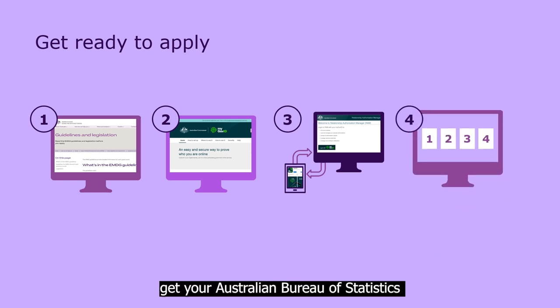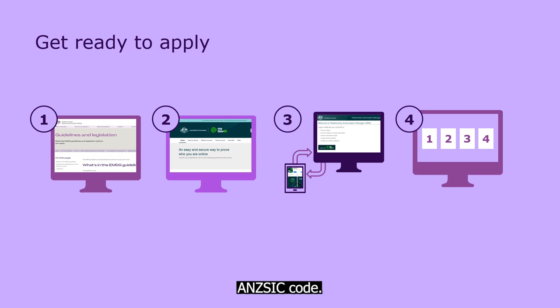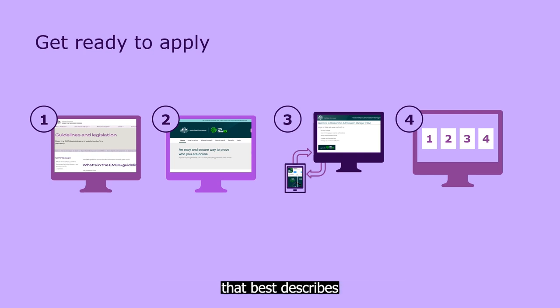Then, get your Australian Bureau of Statistics ANZSIC code. It's the four-digit industry class that best describes your main business activity.